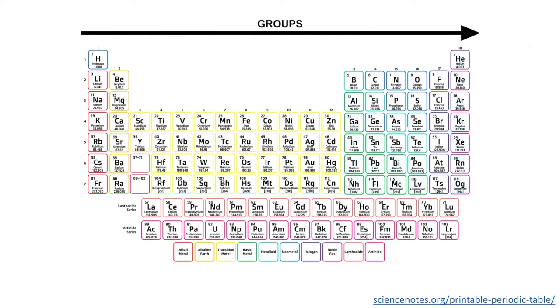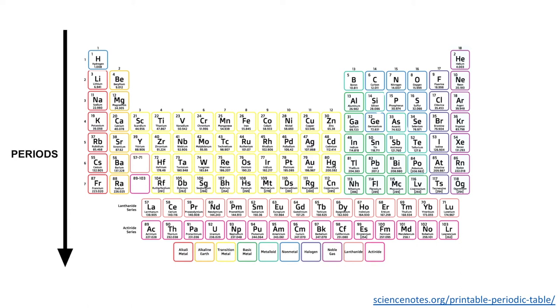Across the top we have what's known as groups, which represent the columns of the periodic table. These groups are all elements that have the same number of electrons in their outer shell, the same number of valence electrons. Down the side we have what's known as periods, so you have the first, second, third, fourth period. These are elements that have the same number of shells, but a different number of electrons in those shells.